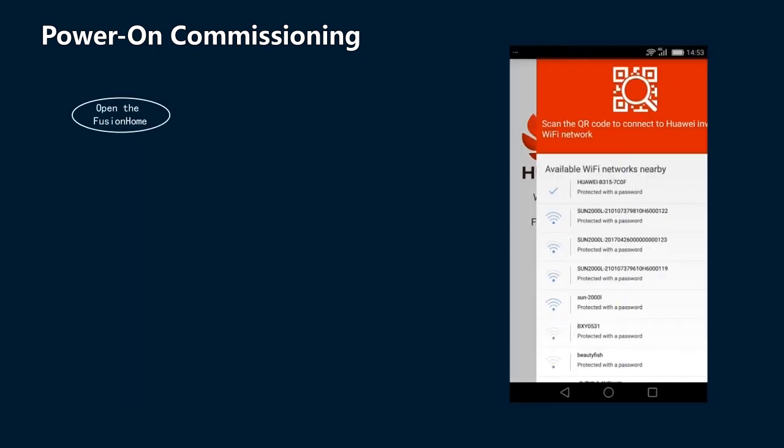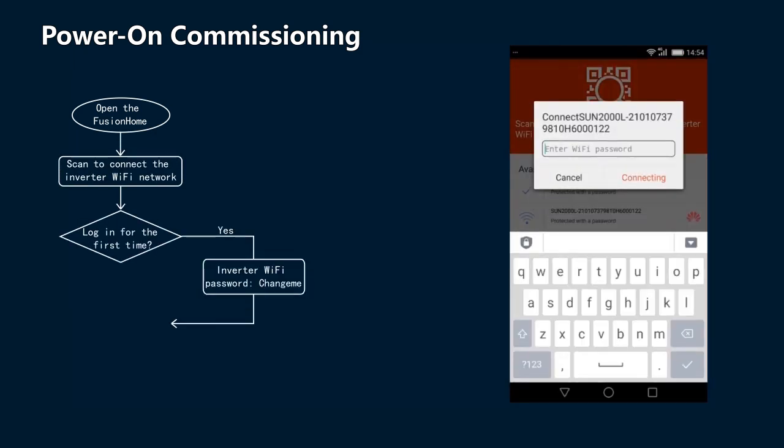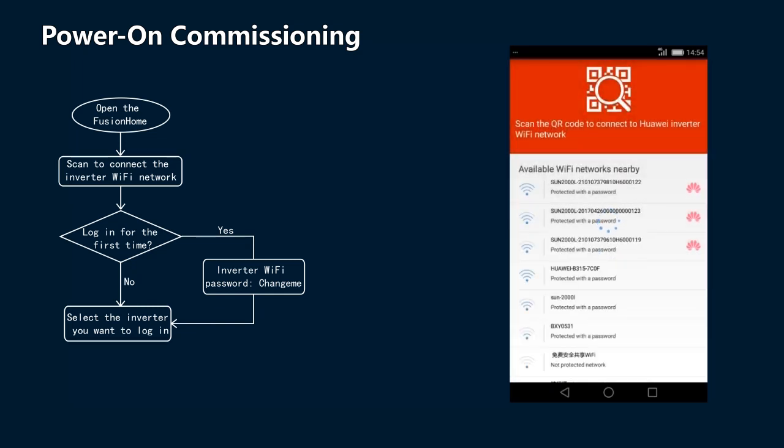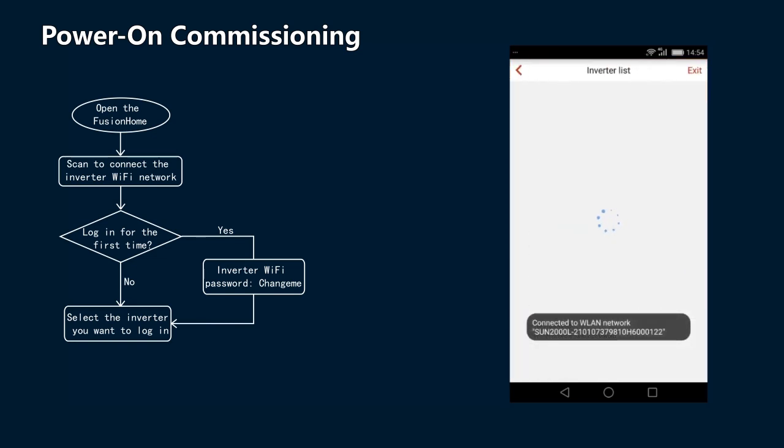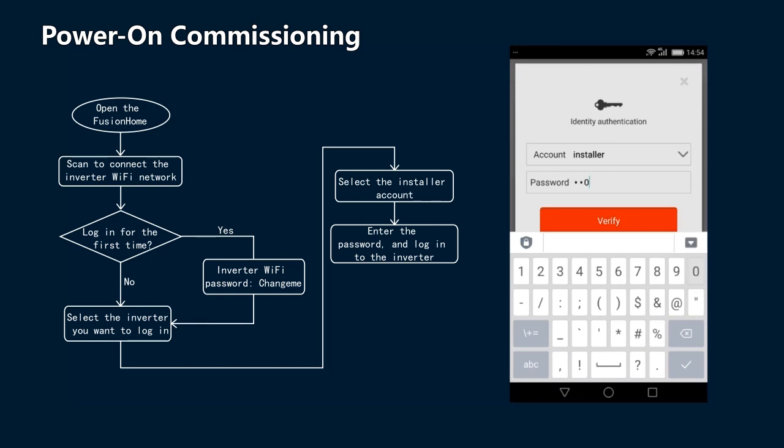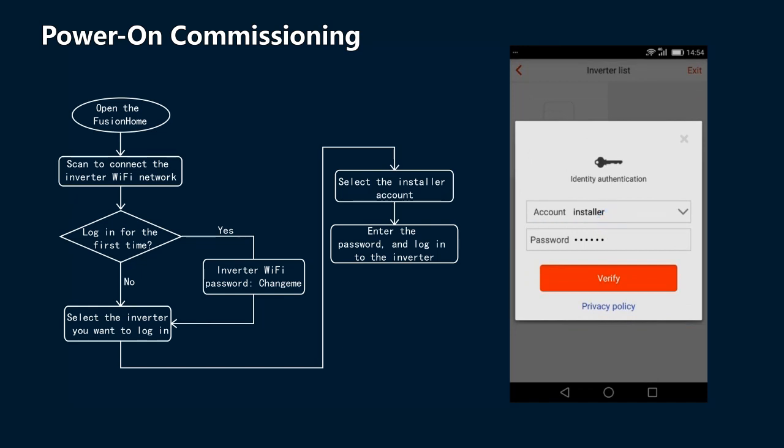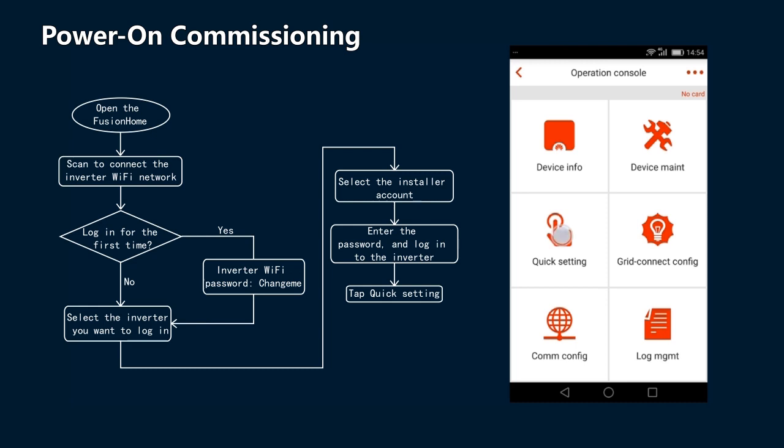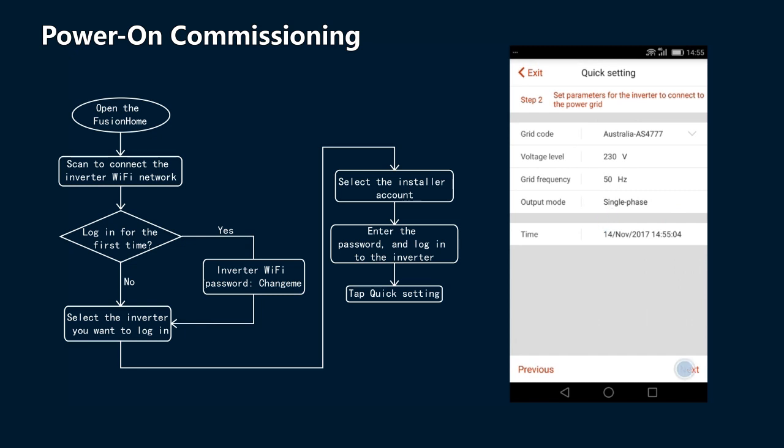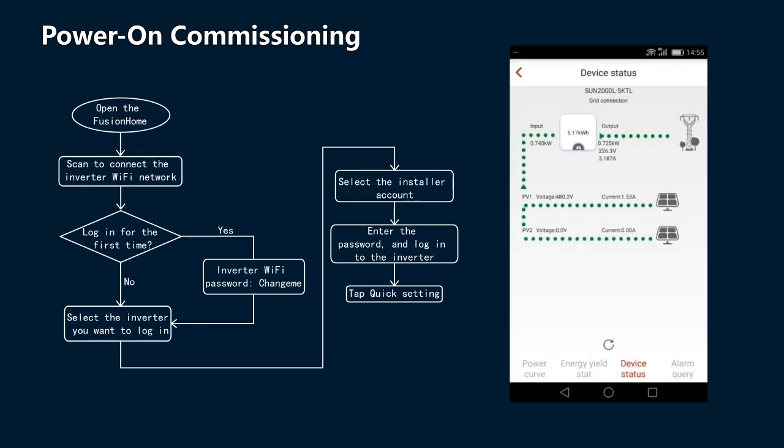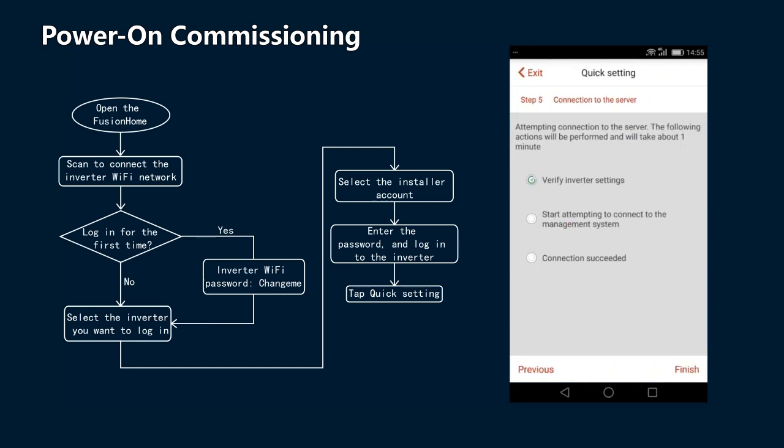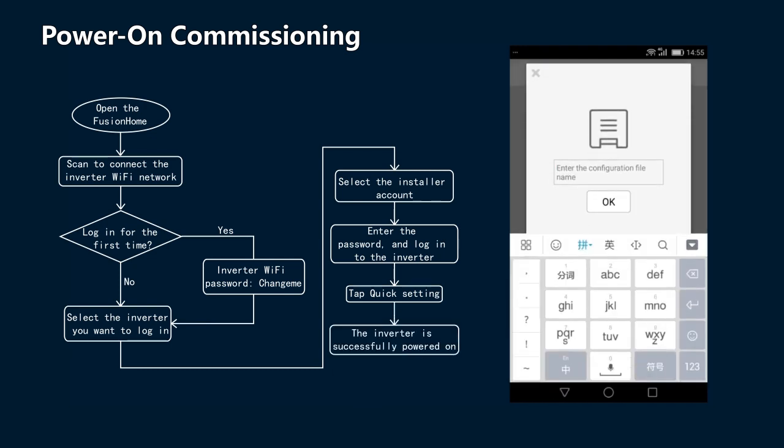Open the Fusion Home app. Scan to connect the inverter Wi-Fi network. Select the installer account, enter the password and log in to the inverter. Tap Quick Setting. The inverter is successfully powered on.